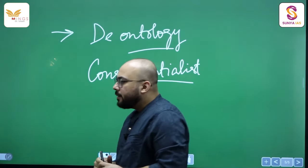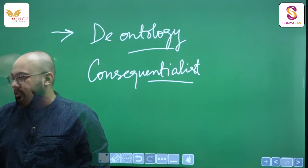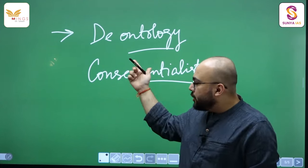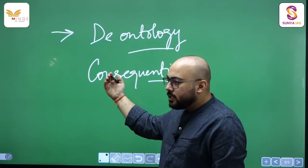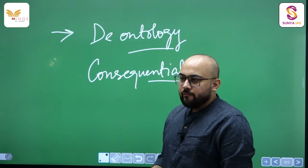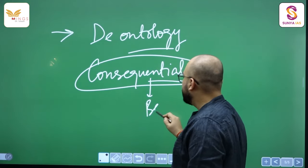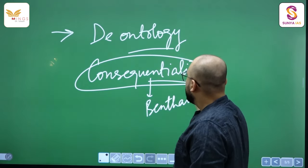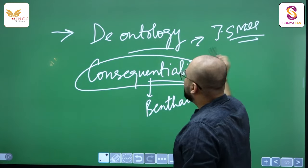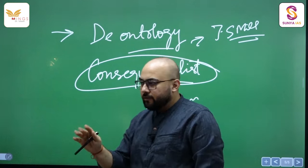Both these terms are basically related to paper 4 of the UPSC examination on ethics. One thinker belongs to the deontology school of thought and another thinker belongs to the consequentialist school of thought. When we are talking about Jeremy Bentham, he belongs to the consequentialist school.